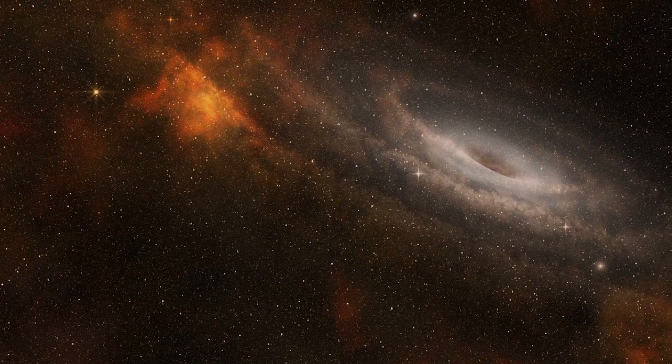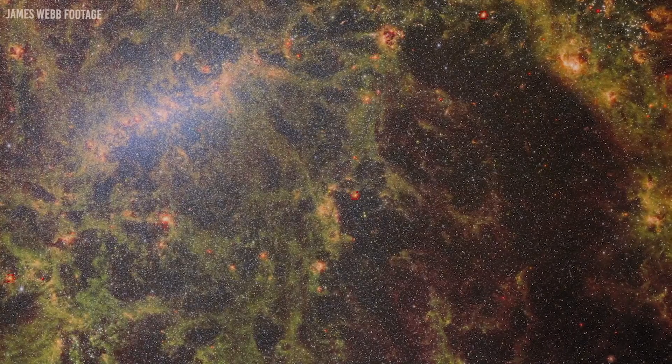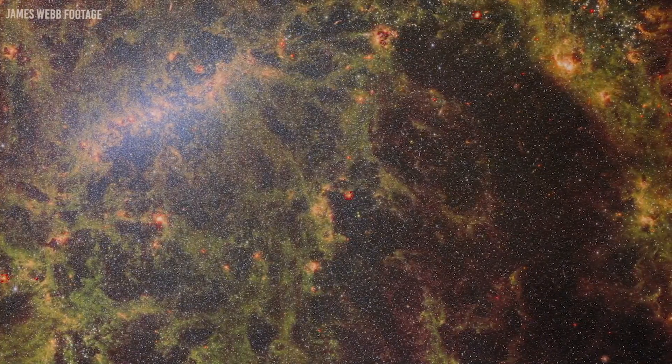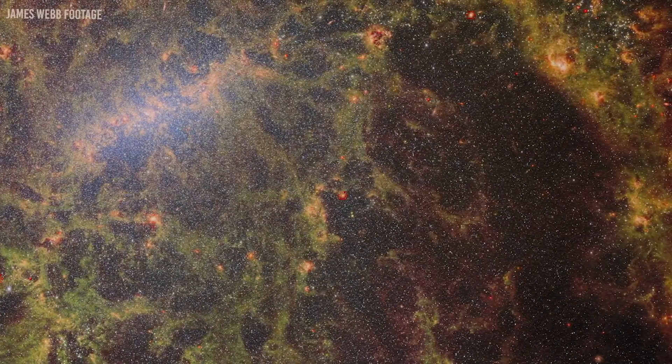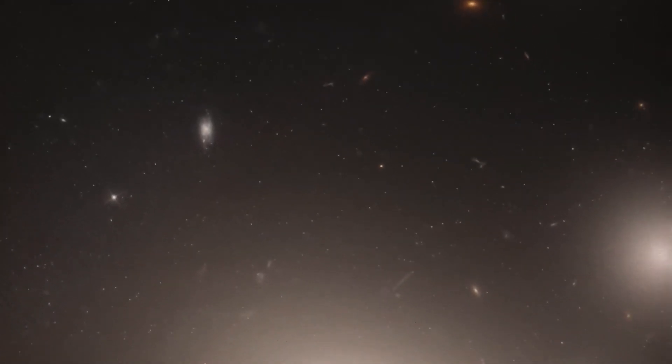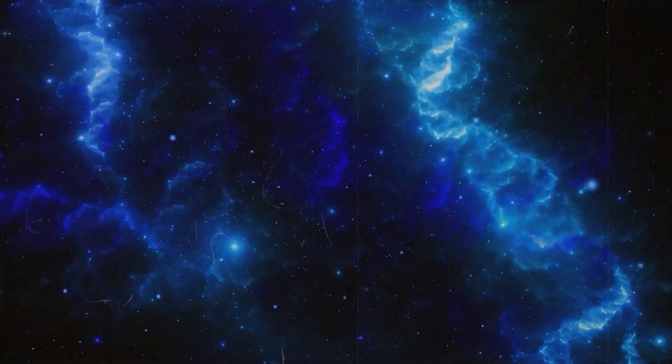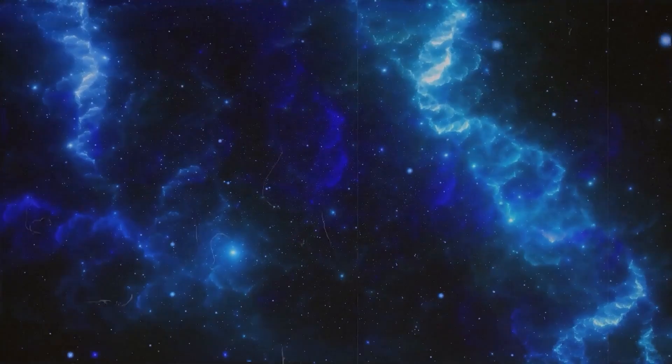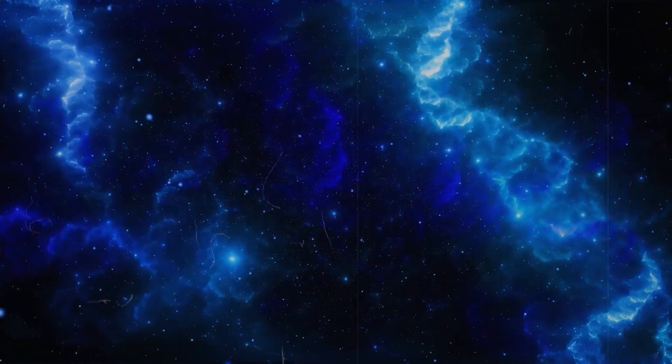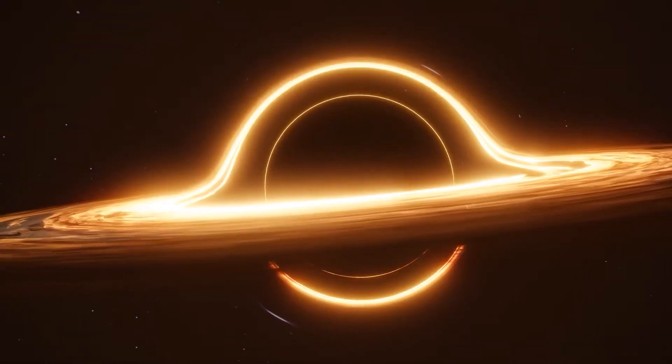According to experts, the galaxy, known as GS9209, formed some 800 million years after the Big Bang, making it the earliest galaxy ever found. The number of stars in this galaxy is comparable to that of the Milky Way, while being around 10 times smaller. They are thought to have formed quickly before star creation in the galaxy ceased. GS9209 is the earliest known example of a galaxy no longer producing stars, known as a quiescent galaxy. Additionally, the study reveals that it has a supermassive black hole at its core.